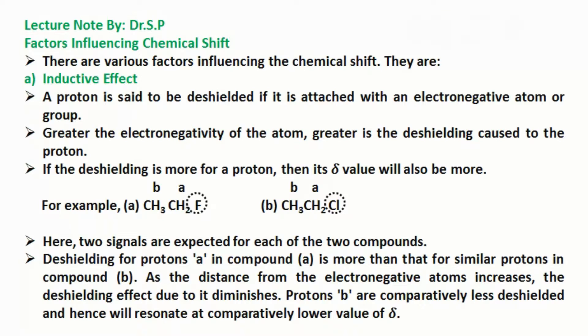Let's take an example of fluoroethane as compound A and chloroethane as compound B. Here, two signals are expected for each of the two compounds. Deshielding for protons 'a' in compound A is more than that for similar protons in compound B. As the distance from the electronegative atoms increases, the deshielding effect due to it diminishes. Protons 'b' are comparatively less deshielded and hence will resonate at comparatively lower value of δ.